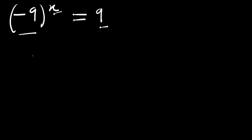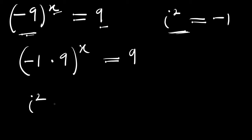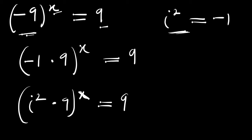What we are going to do is rewrite negative 9 as negative 1 times 9, raised to the power of x, and this equals 9. Remember, if you have i raised to the power of 2, this equals negative 1. So we insert i squared in place of negative 1. We now have i² times 9 to the power x equals 9.